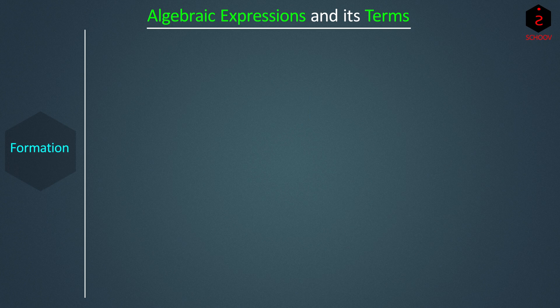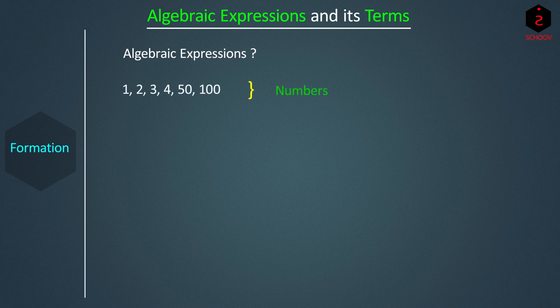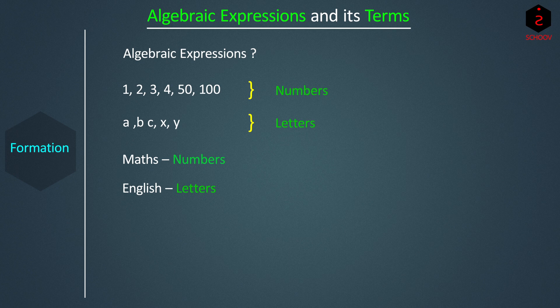Before understanding formation, let's see what algebraic expressions are. In maths, we have studied numbers 1, 2, 3, 4, 50, 100, etc., which were simple and easy. In algebra, we suddenly start talking about letters A, B, C, X, Y, etc., and the confusion starts. Maths means numbers — letters are studied in English. So why do we have letters in maths? Don't worry, it is very easy.